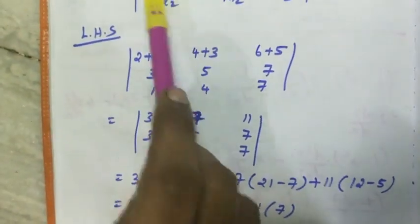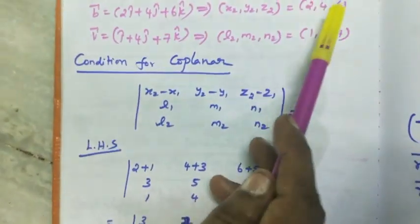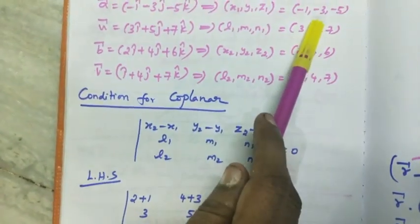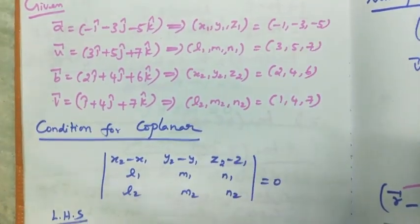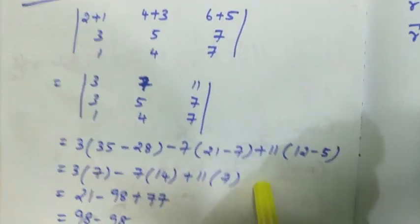Substitute x2 minus x1: 2 plus 1, 4 minus minus 1 plus 3, 6 minus minus 5 plus 5. And l1, m1, n1. Determinant expansion: 3 into 35 minus 28.